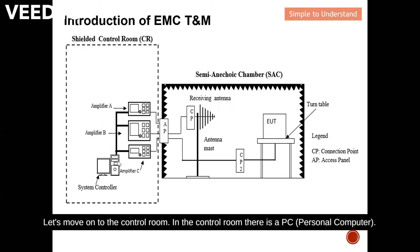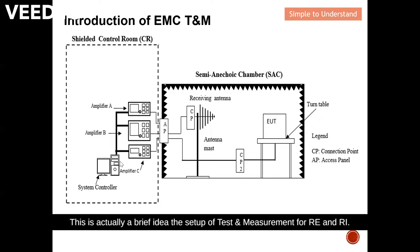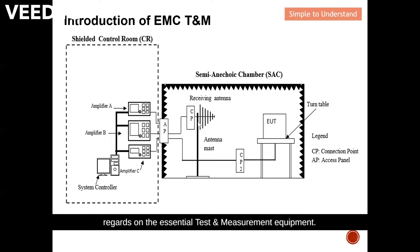The antenna connects to either the amplifier or the EMI receiver, depending on whether it's RE or RI. In the control room there is a PC that controls most of the test and measurement equipment. The final results are sent to this computer for analytics to determine whether your DUT or EUT is compliant with EMC regulations. That's a brief overview of the RE and RI test setup.